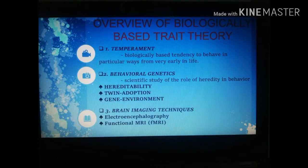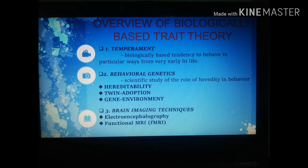To determine the biological basis of personality, Eysenck used brain imaging techniques, specifically electroencephalography (EEG) and functional MRI. EEG records electrical activity of the brain and is superior to other brain imaging techniques in showing when brain activity occurs, but not specifically where. Functional MRI tells us what is working in the brain by tracking blood oxygen use in brain tissue.